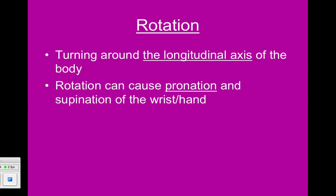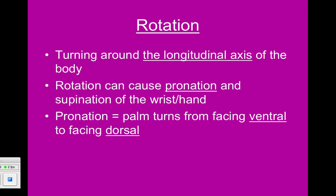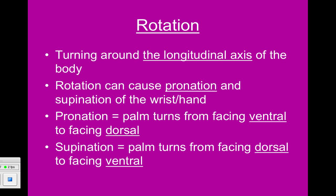Rotation can also cause pronation and supination of the wrist and hand. Pronation is when we take the palm, which in anatomical position faces anterior or ventral, and flip it to face dorsal — going from palm up to palm down. Supination is the opposite: taking it from palm down and turning it so the palm faces the front of the body.